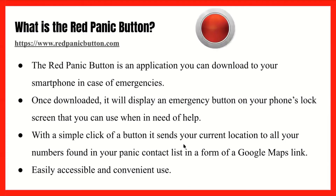The Red Panic Button app is a pretty useful app. You can download it to your smartphone, and once downloaded, it will display an emergency button on your phone's lock screen that you can use when in need of help. With a simple click of the button, it sends your current location to all your numbers found in your panic contact list in the form of a Google Maps link. It's pretty accessible and convenient to use.